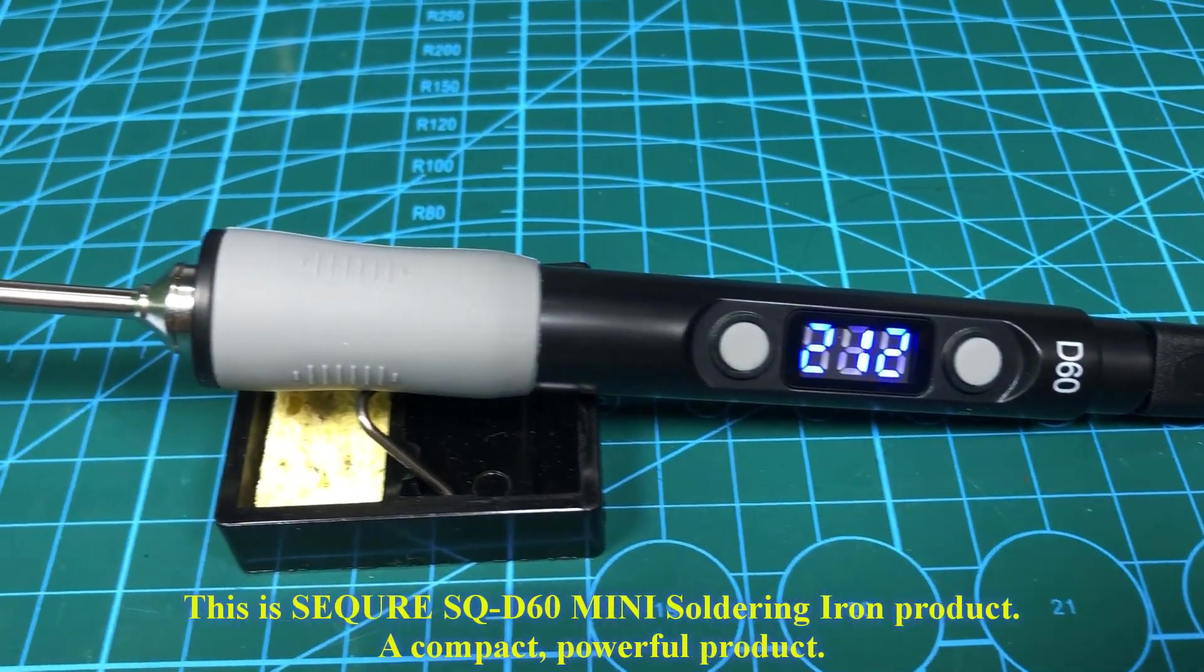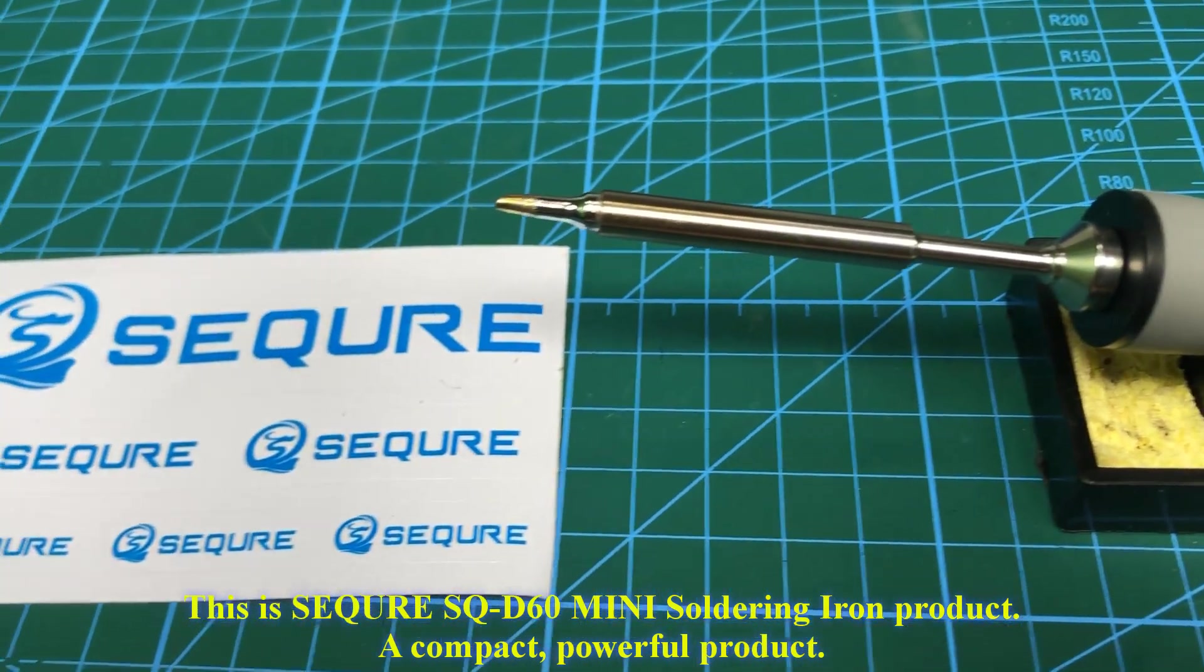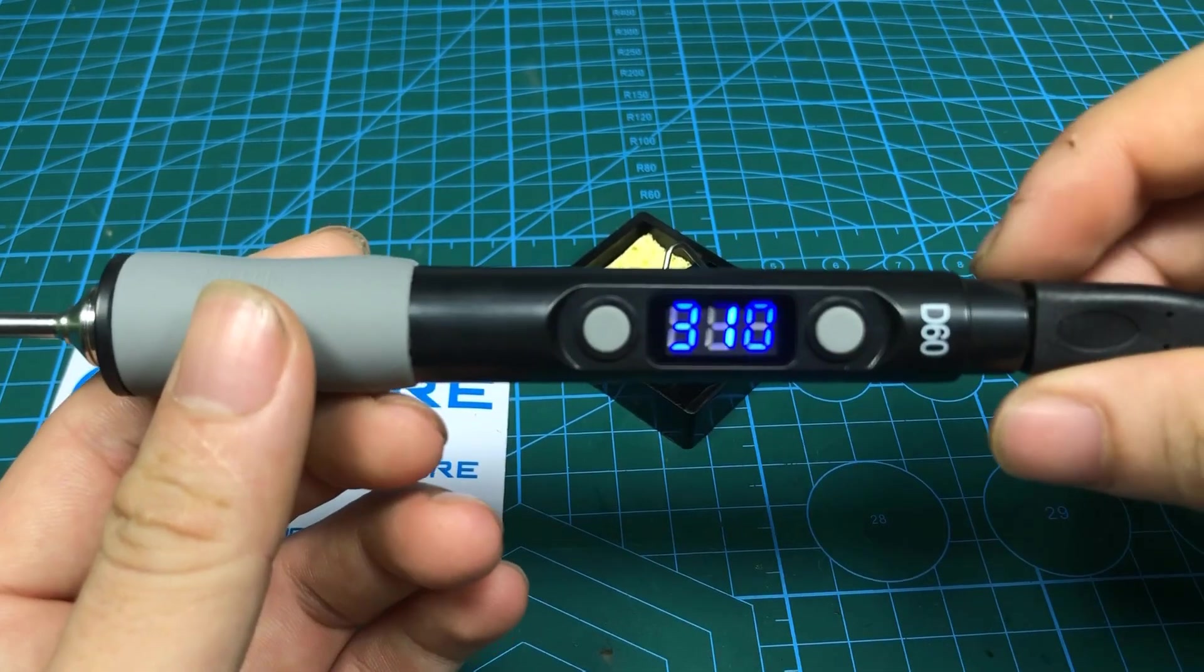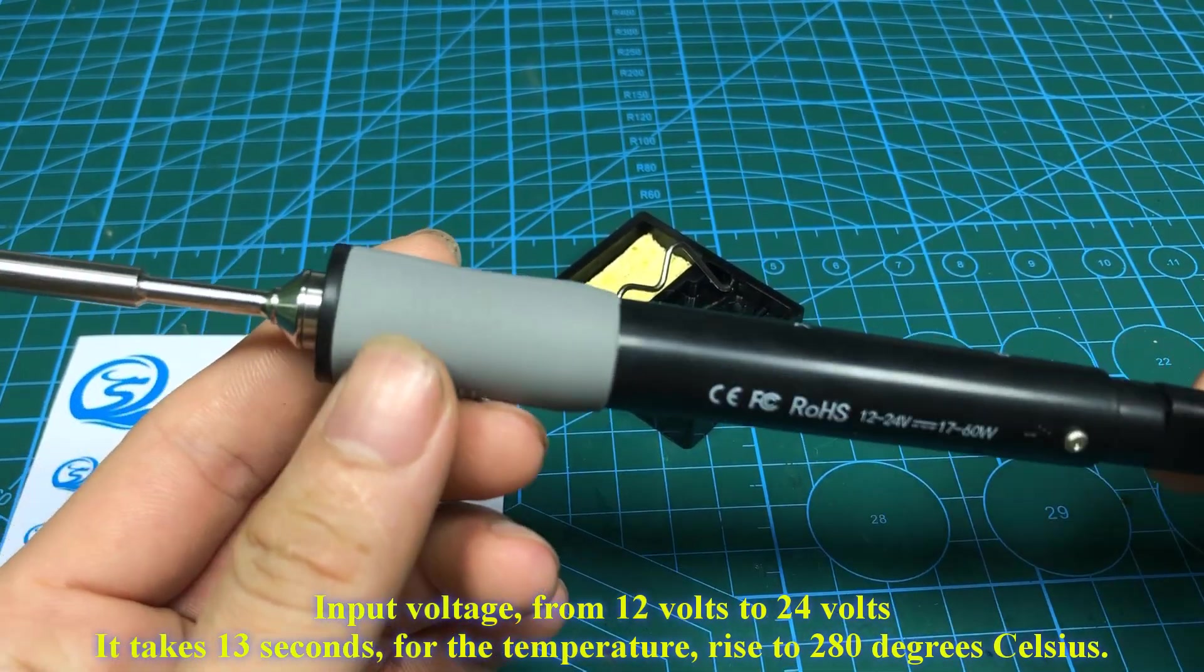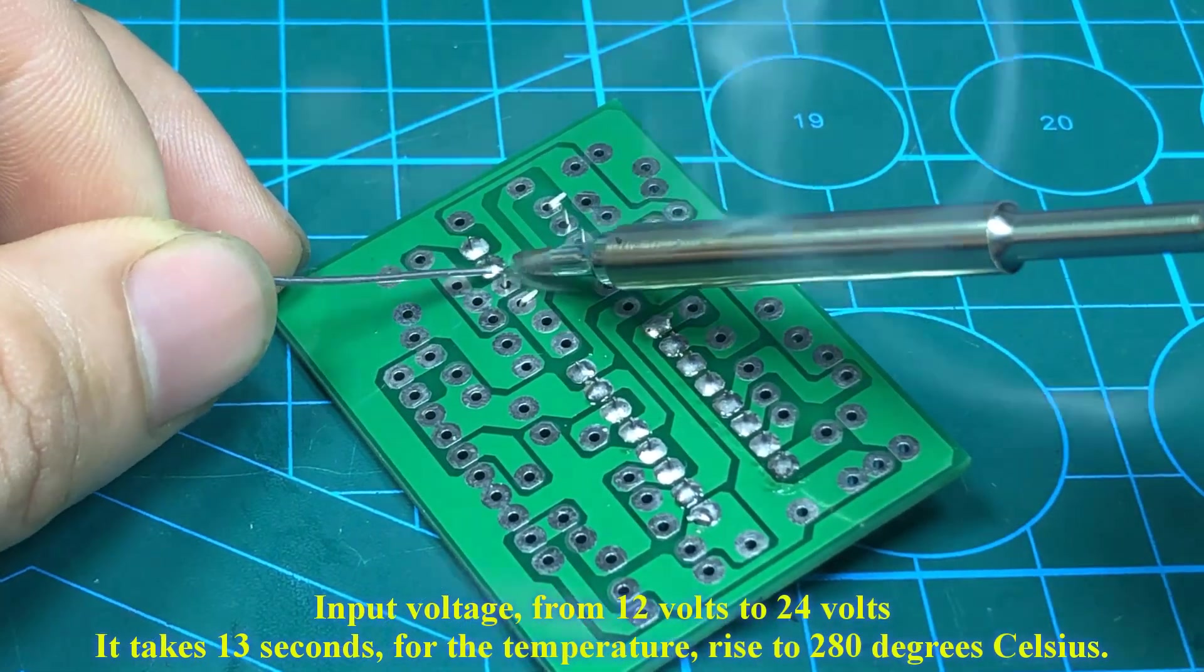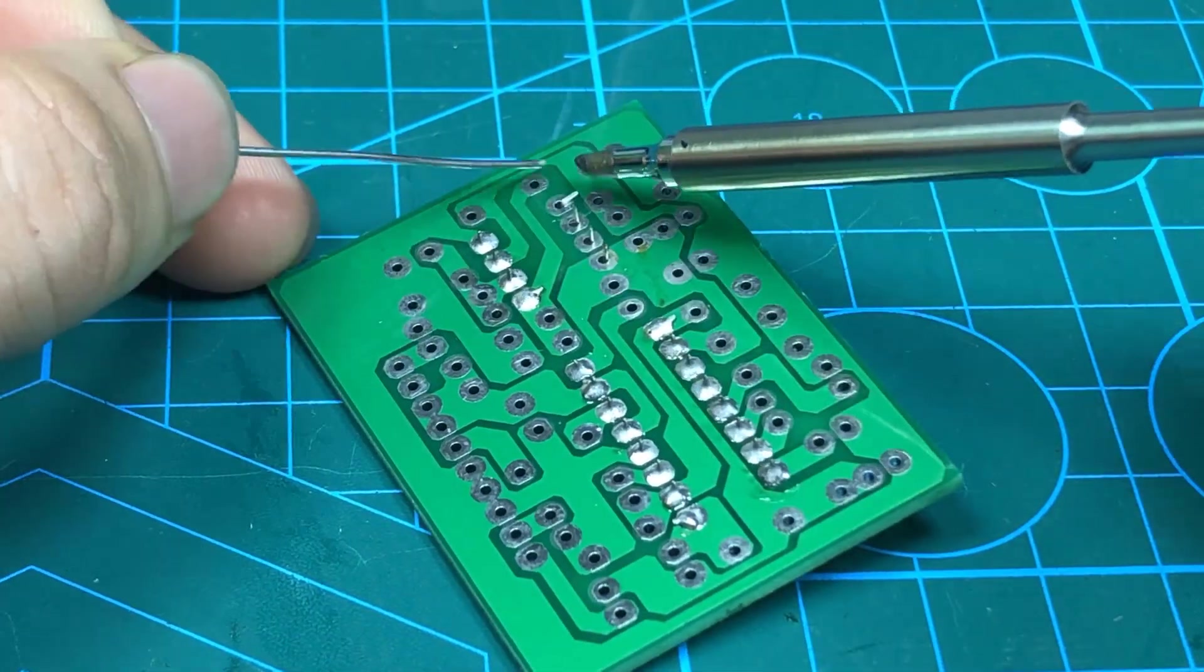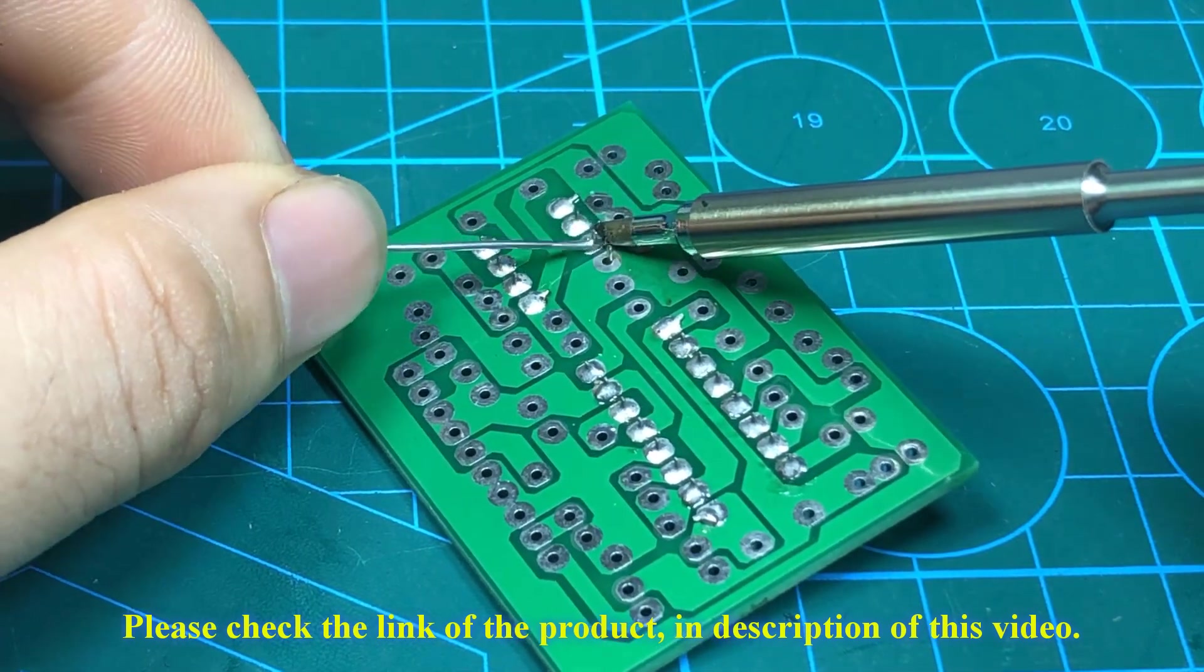This is a Secure Square D60 mini soldering iron product, a compact, powerful product. Input voltage from 12 volts to 24 volts. It takes 13 seconds for the temperature to rise to 280 degrees Celsius. Please check the link of the product in description of this video.